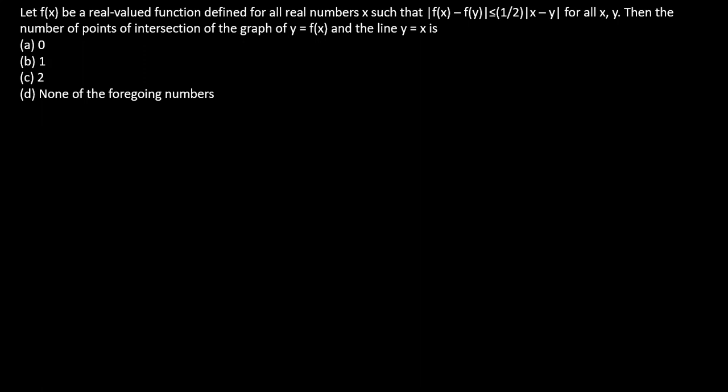So having said that, let's try and understand the questions involved. Let f(x) be a real valued function defined for all real numbers x such that |f(x) - f(y)| ≤ (1/2)|x - y| for all x, y. Then the number of points of intersection of the graph y = f(x) and the line y = x is: